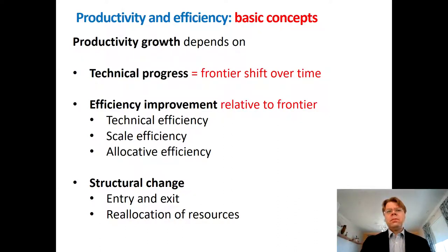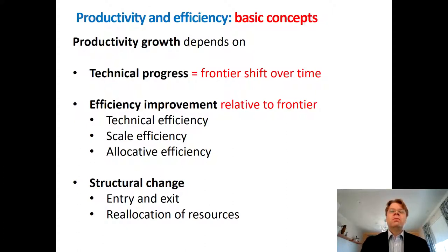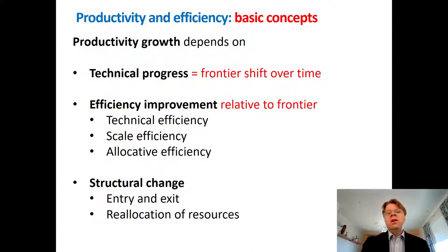Firstly, we need the frontier production function to understand technical progress. Technical progress is understood as the shift of the frontier production function over time, which indicates further possibilities with the technology. On the other hand, efficiency is usually measured relative to the frontier — technical efficiency, scale efficiency, and allocative efficiency are all measured relative to the frontier production function.